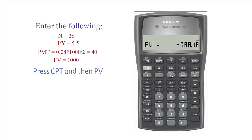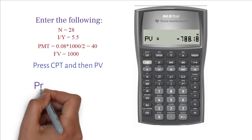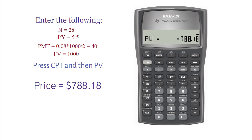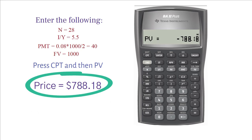Please note that PV is considered a cash outflow or negative number — just ignore the negative. So, the current market price of the bond is $788.179. In other words, the maximum price you should offer for this semiannual bond is $788.18.